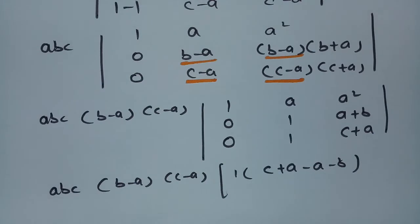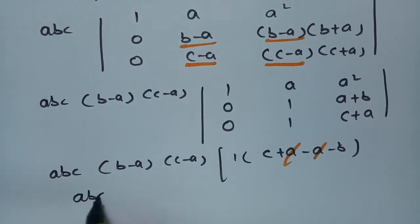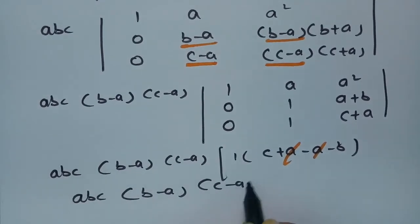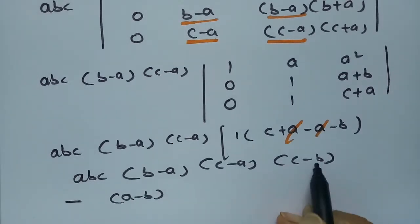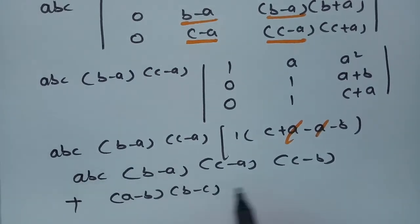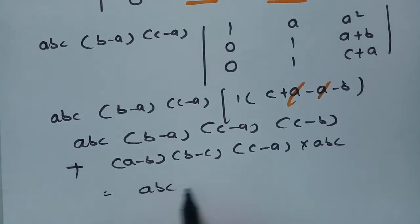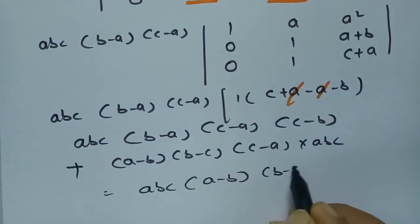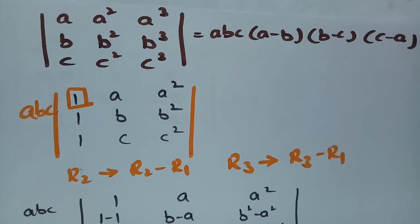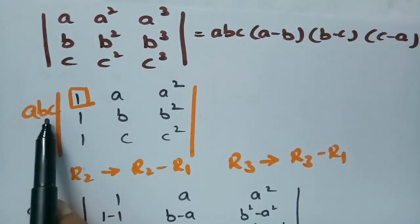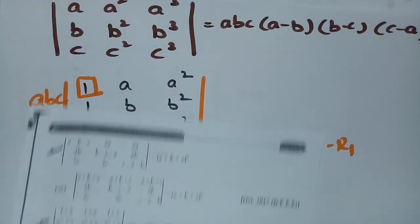Expanding: 1 times [(a+b)(?) − ...]. After simplification, (c+a)−(a+b) = c−b, and taking minus common gives (a−b). So the final result is abc(a−b)(b−c)(c−a), which is what was required. This question is also solved.